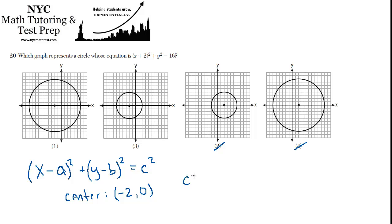So this is c squared is 16, c is 4. And which one of these has a radius of 4? This one. 1, 2, 3, 4.